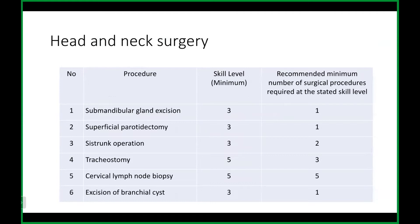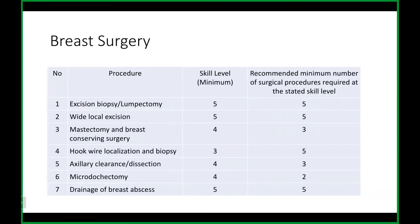For head and neck, the obvious ones are tracheostomy and cervical lymph node biopsies. In breast surgery, these are the minimum numbers we expect you to do. Recently there have been quite a lot of problems getting cases, especially over the last three years with COVID. We understand you've been stretched and doing COVID work, so we wouldn't be too harsh. Prepare your logbook with those numbers; if you're short, we can discuss and see how we can help.